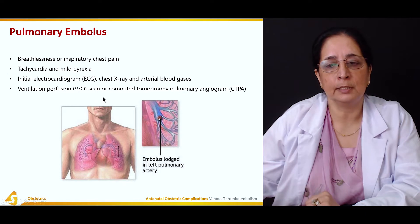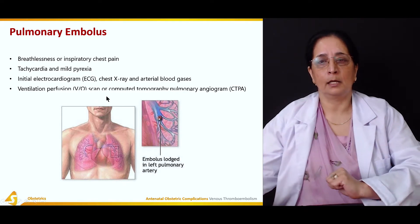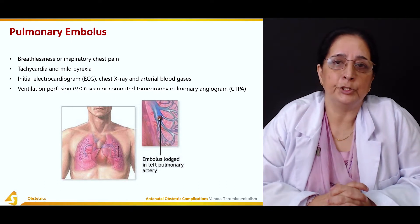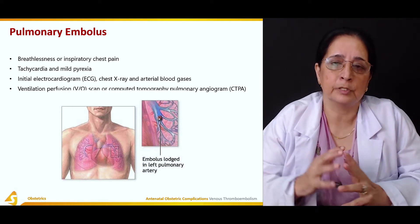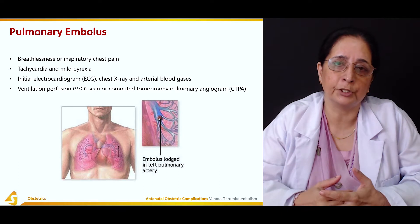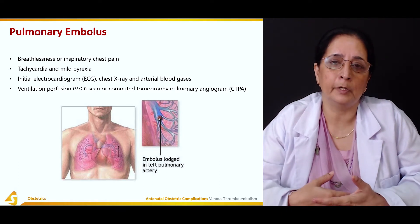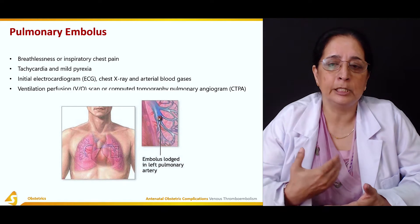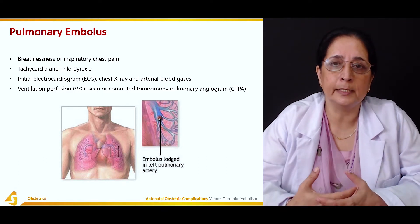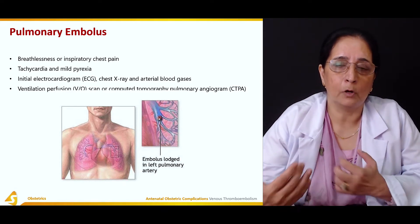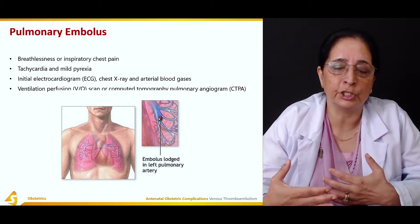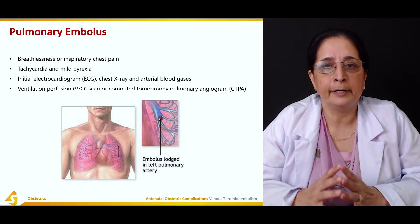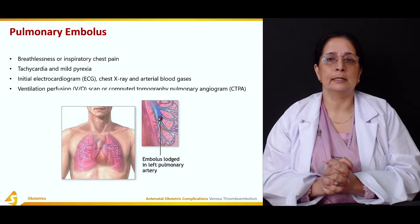Ventilation perfusion scan or computed tomography and pulmonary angiogram are also performed. ECG, chest X-ray, and arterial blood gases should be obtained because of poor ventilation, followed by ventilation perfusion scanning.